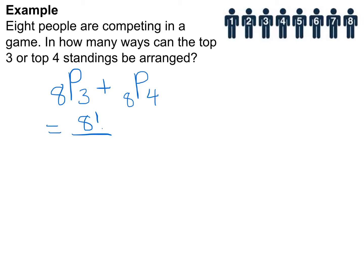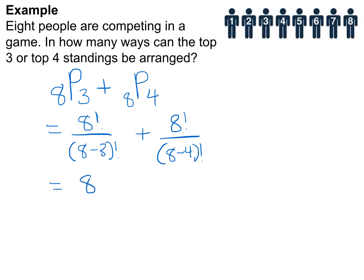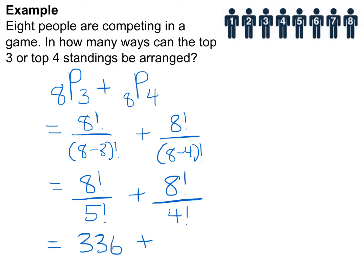So 8P3 equals 8! divided by (8−3)!, which is 8!/5!, giving 336. Then 8P4 equals 8! divided by (8−4)!, which is 8!/4!, giving 1680. Adding those together gives us 2016 total ways.